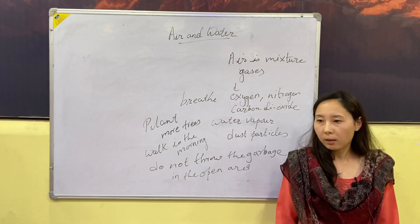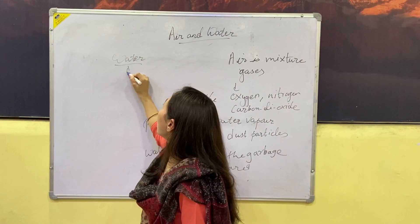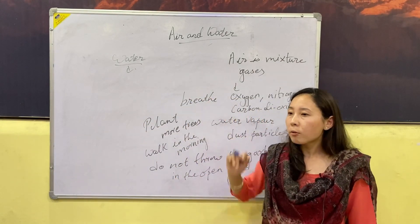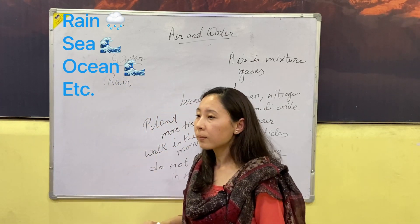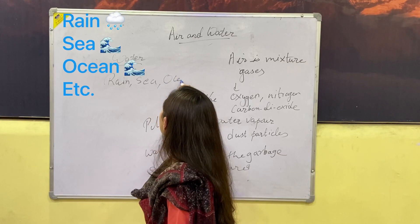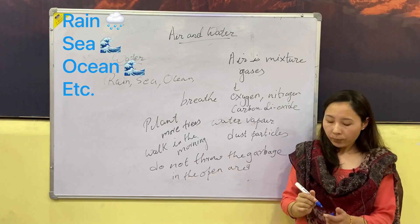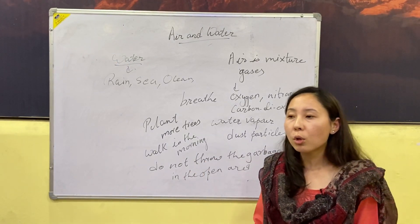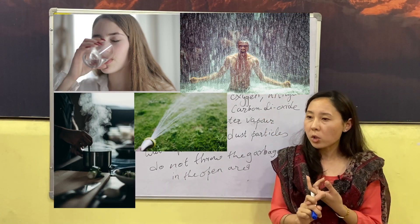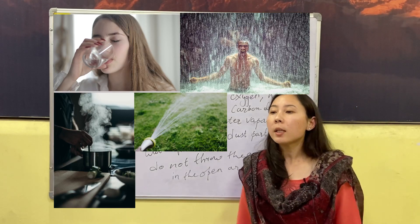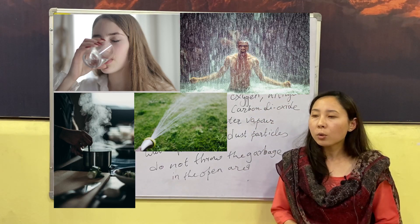Now let's come to water. From where do we get water? The main sources of water are rain, sea, ocean, rivers, and lakes. We need water in our daily lives for drinking, cooking, and washing. Plants also need water.